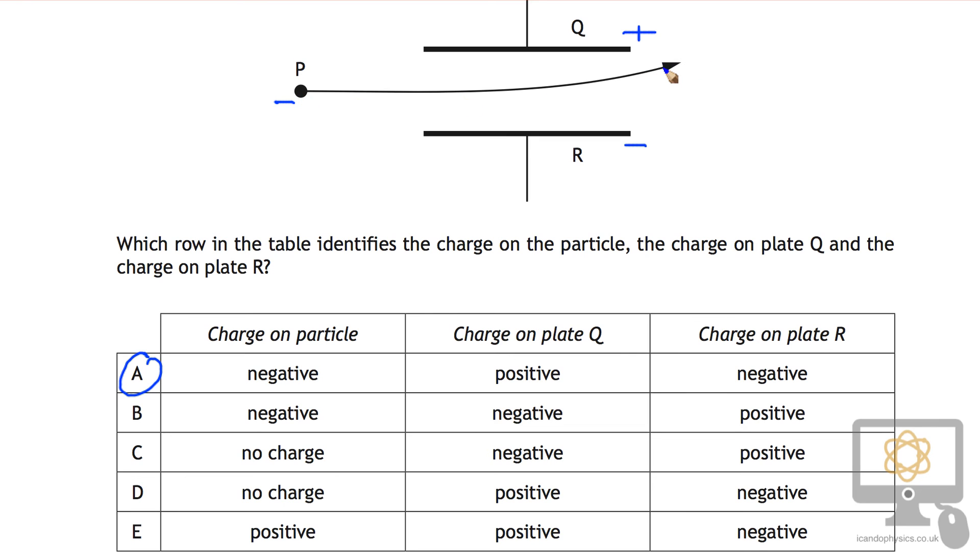The charge is moving upward and so if it is negative that must be positive. If this is positive then that has to be negative and the only option we have which is positive charge on plate Q is also positive, so that wouldn't work.